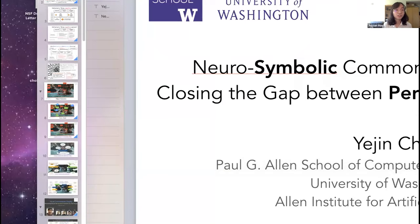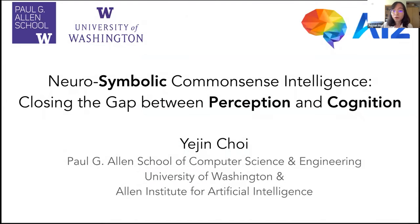Our second speaker is Yejin Choi. Professor Yejin Choi is an associate professor at the Paul Allen School of Computer Science and Engineering at the University of Washington. She is also an adjunct professor at the Linguistics Department, an affiliate of the Center for Statistics and Social Sciences, and a senior research manager at the Allen Institute for Artificial Intelligence, AI2. Her primary research interests are in natural language processing, machine learning, artificial intelligence, with broader interest in computer vision and digital humanities. Let's welcome Yejin.